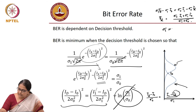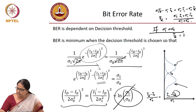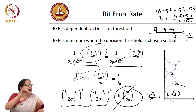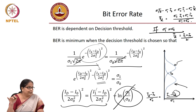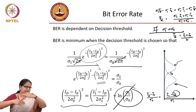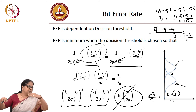If sigma1 equals sigma0 — which is possible when operating in a thermal-noise-limited condition — then the decision threshold simplifies to iD = (i1 + i0) / 2. You just keep it at the halfway point. If the noise corresponding to bit 1 and the noise corresponding to bit 0 are the same, the best decision threshold is the midpoint.